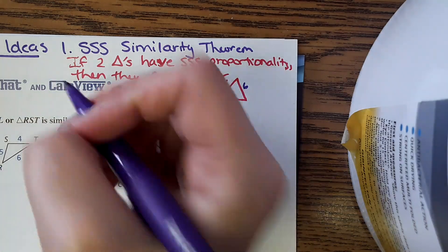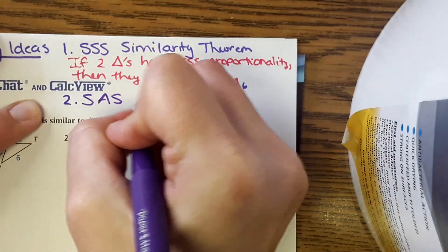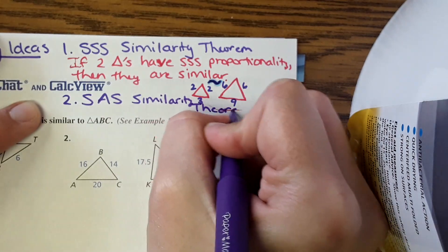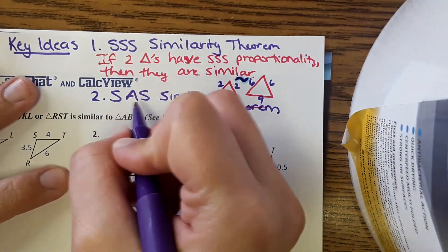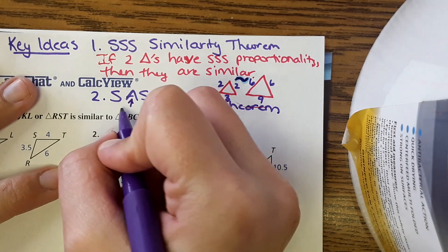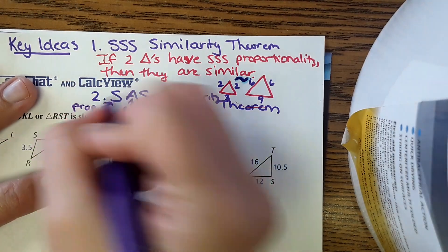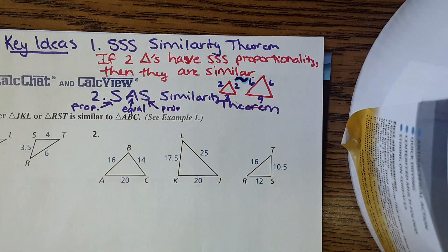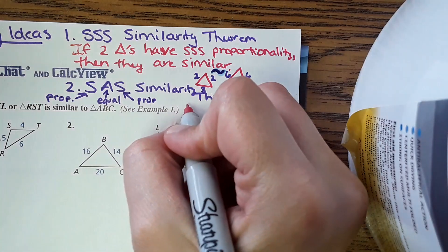Second one. The second theorem is the side-angle-side similarity theorem. It's exactly what it sounds like: the sides would have to be proportional — S and S would be proportional — and the angle would be equal. It has to be an included angle.